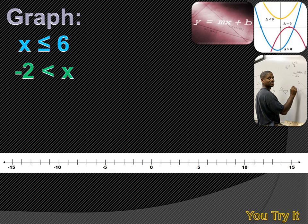You try this one — graph these two inequalities. Draw a number line on a piece of paper and graph X is less than or equal to 6, and minus 2 is less than X. The first one is X is less than or equal to 6, so we need to indicate 6 on the number line. There are two ways we do that with inequalities.